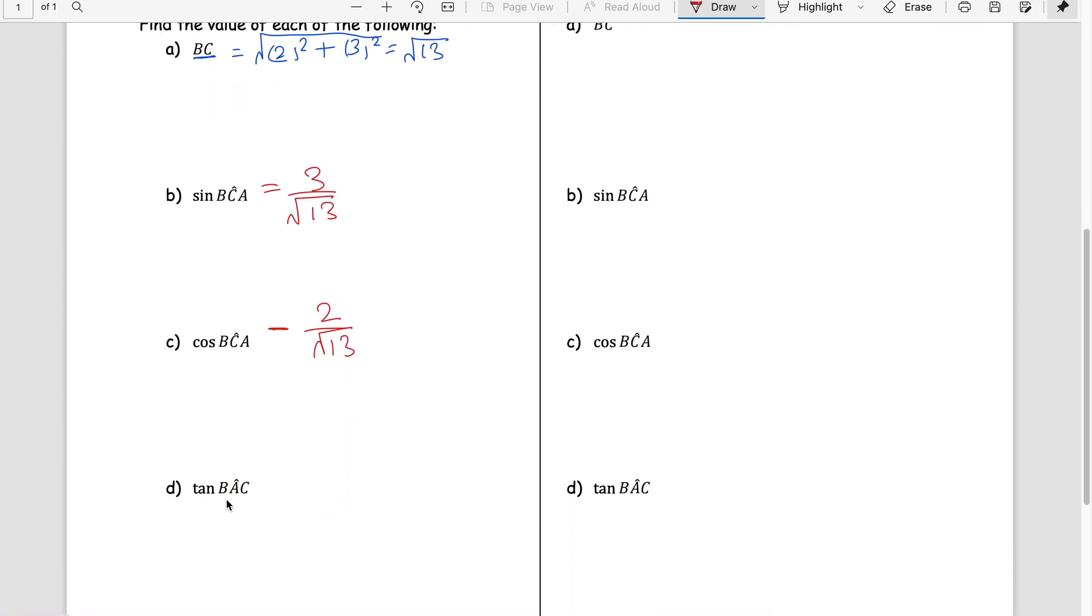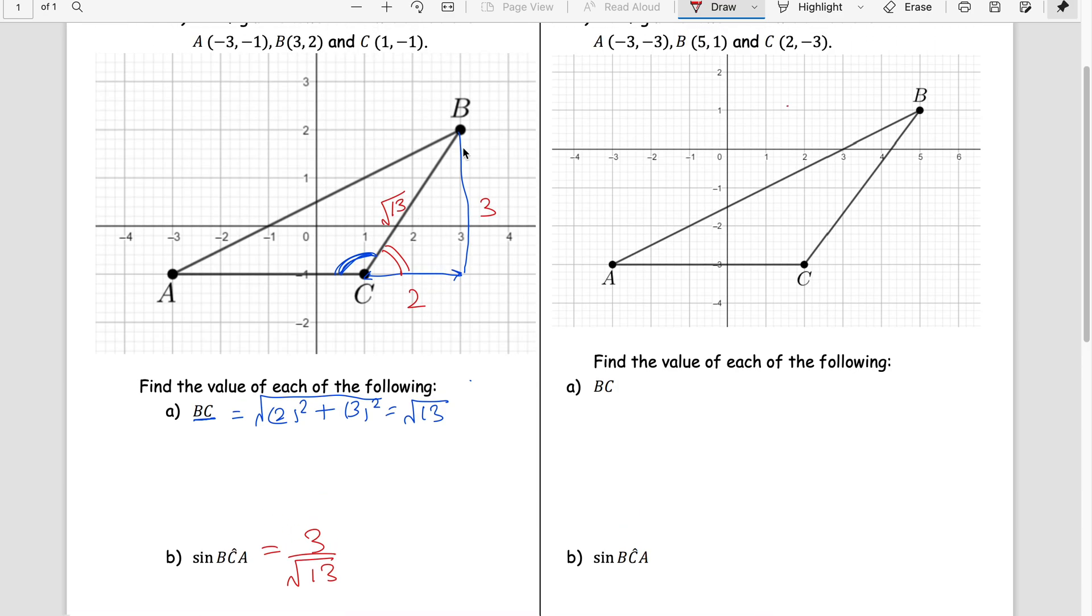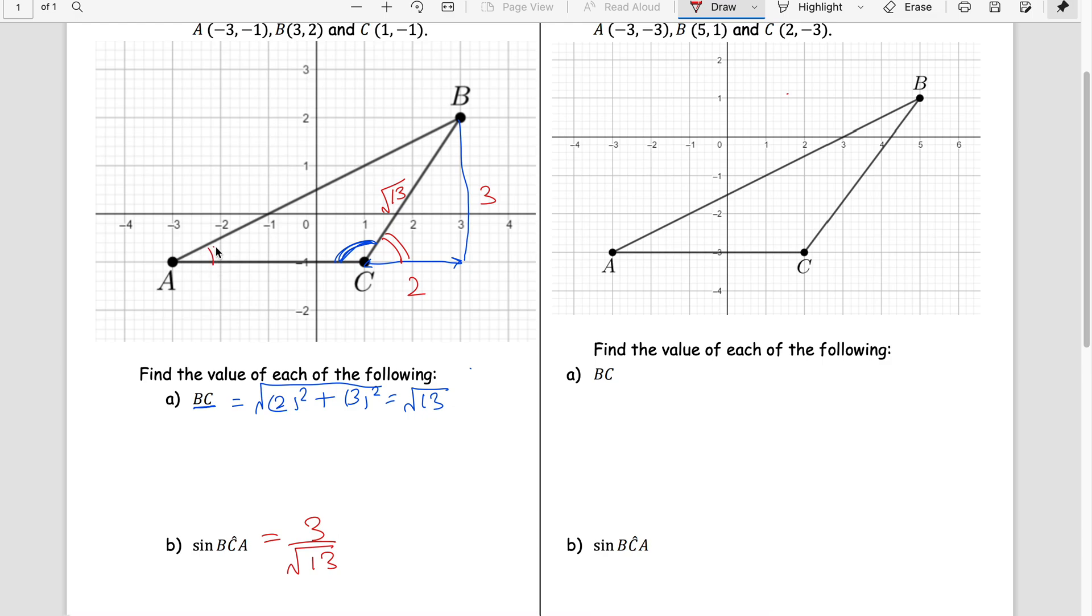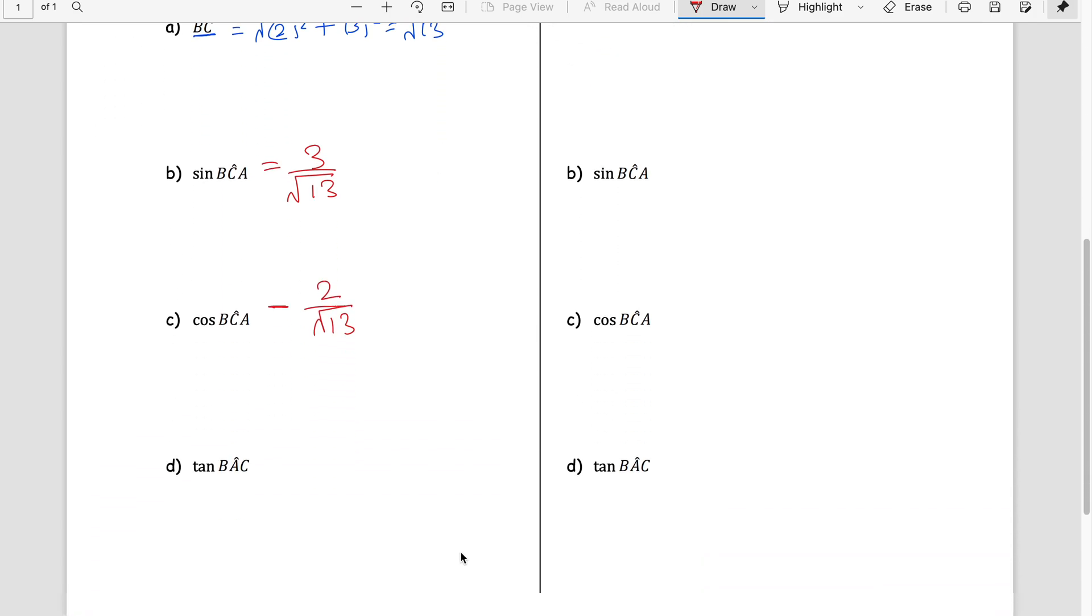Then we have tan BAC. Tan BAC, so now this is this angle. You have to complete your triangle. This complete base is now one, two, three, four, five, six units, and the height is three. So tan is perpendicular over base, which is three by six, and you can simplify it to one by two.